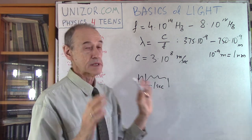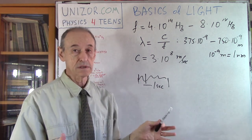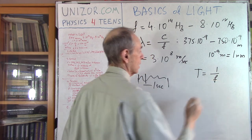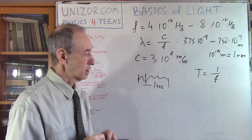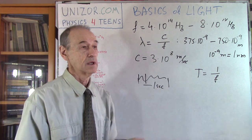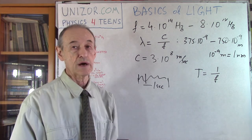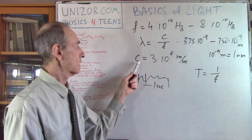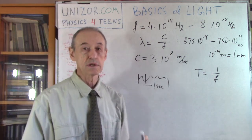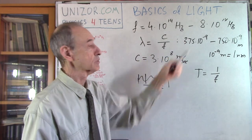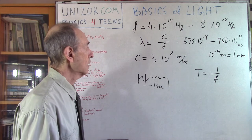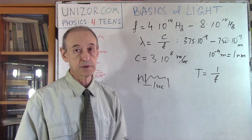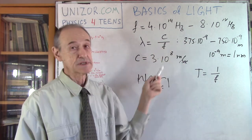This is basically what light is. Whenever the frequency is less, we have longer wavelengths; whenever the frequency is greater, we have shorter wavelengths. You can also mention the period, which is 1 over F, but this is rarely used - it's how much time it takes to cover one particular period. So frequency, wavelength, and speed are the major characteristics of visible light.